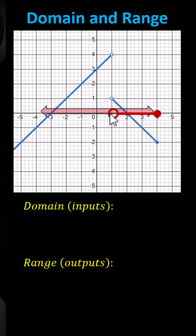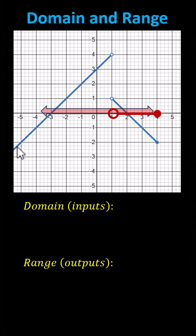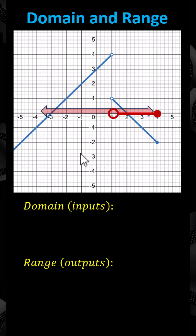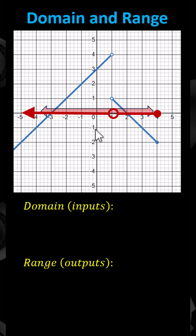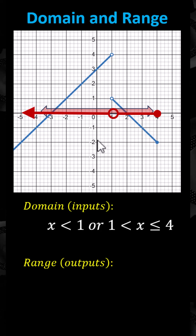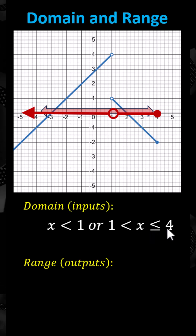Going back to x equals 1, the graph moves left indefinitely. We assume there's an arrow on the left side of the graph. The graph goes down and to the left indefinitely. This is the graph of the domain on the x-axis, which is x less than 1, or x greater than 1 and less than or equal to 4.